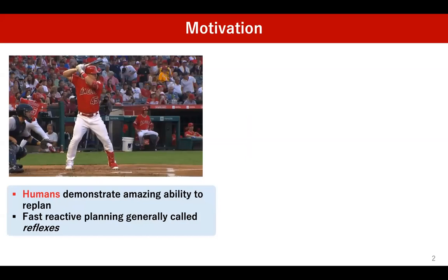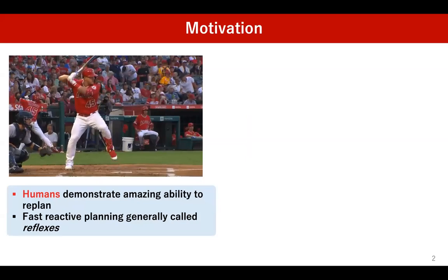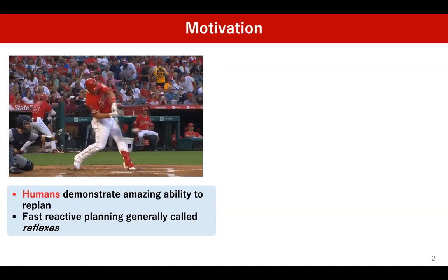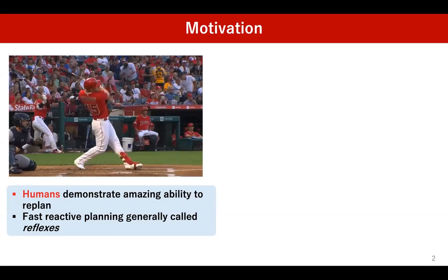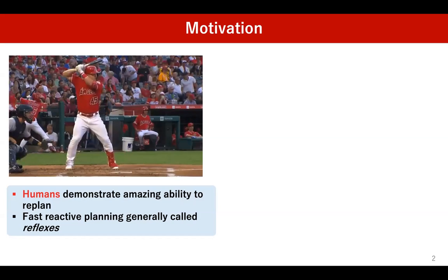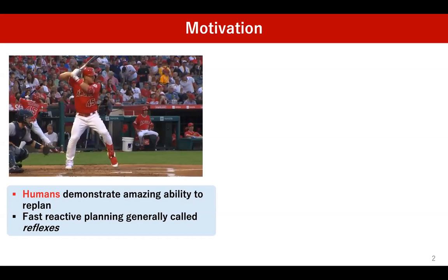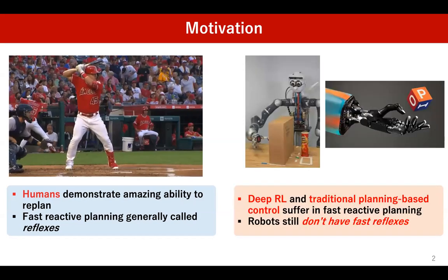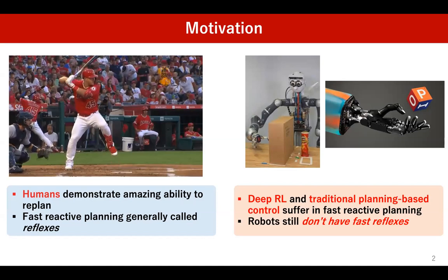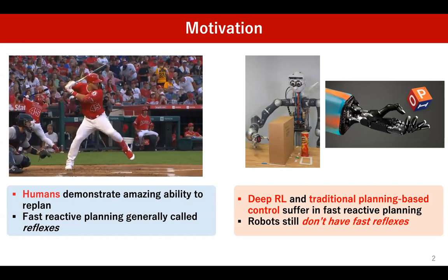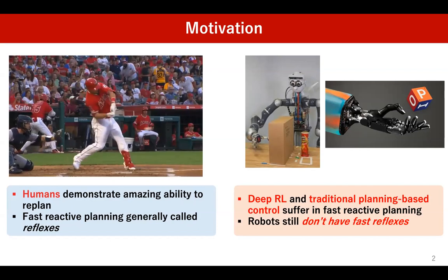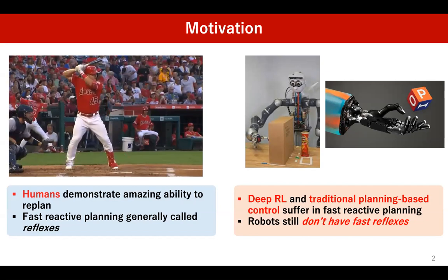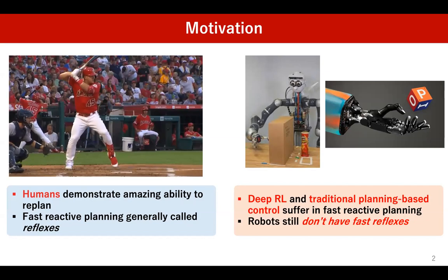Humans demonstrate an amazing ability to replan very quickly when an environment changes. This ability likely results from the generalization capability that humans develop through practice. For a baseball player, these would be many successful swings performed during target practice over many variations of the trajectory of the incoming ball. Our work is motivated by designing agents that can demonstrate such intelligent behavior by reacting to changes in an environment during execution.